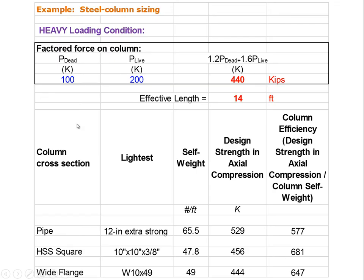Before, we had a factored axial load of 36 kips. Now we're going to start with 100 kips of dead and 200 kips of live. When we factor those with the appropriate dead load factor and live load factor, we have a total factored axial load of 440 kips. We're going to assume the effective length of this column is 14 feet, such as we might have in a multi-story building.